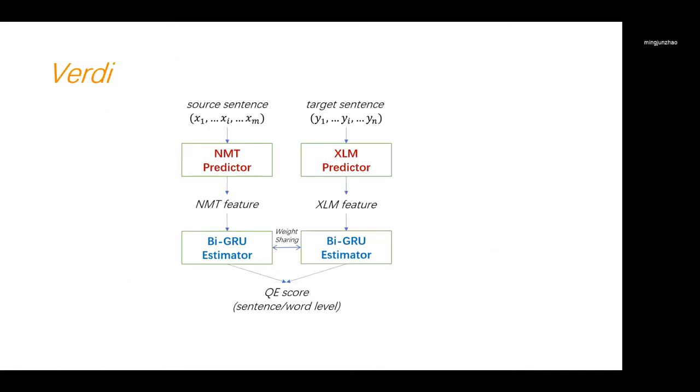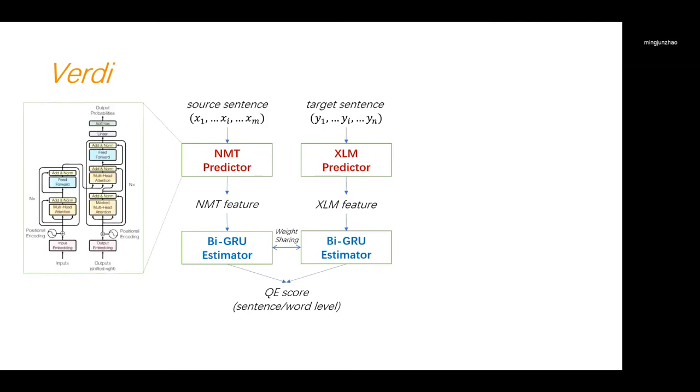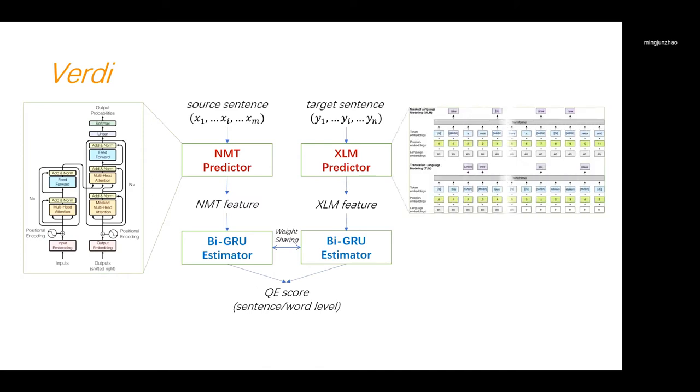In this paper, we propose Verdi, a novel translation quality estimation and error detection method, which falls into the predictor estimator framework. Our framework utilizes two word predictors for feature extraction, including an NMT model and a pre-trained XLM model. The NMT predictor is made up with the transformer model, which is a greatly popular model choice for neural machine translation. Yet, we leverage multiple training techniques, including model level dual learning and mixture models, to boost the feature extraction ability of the transformer.